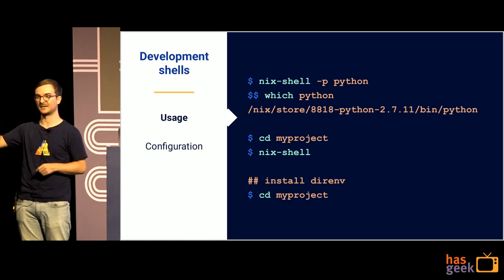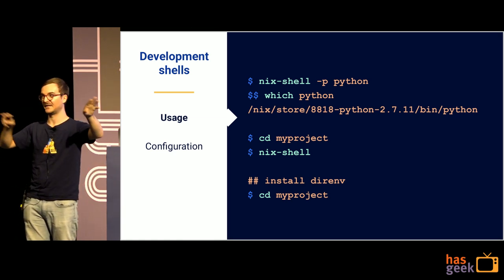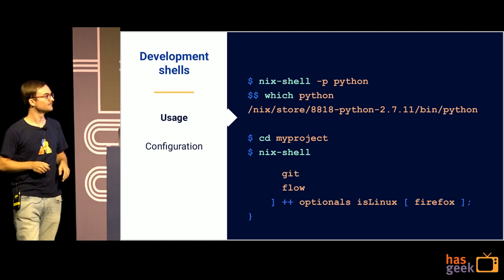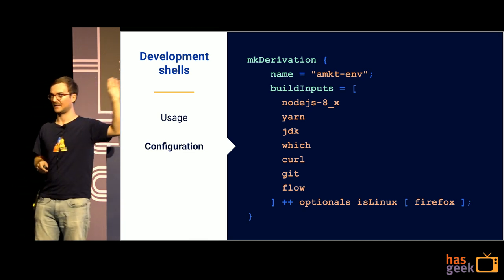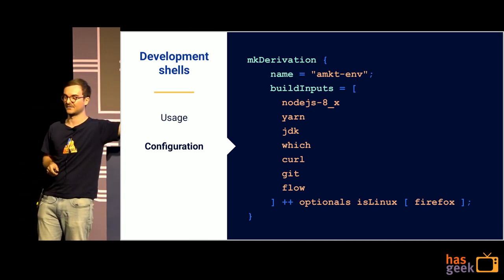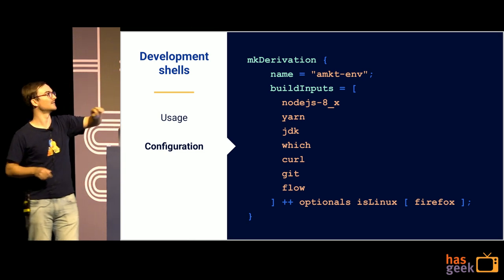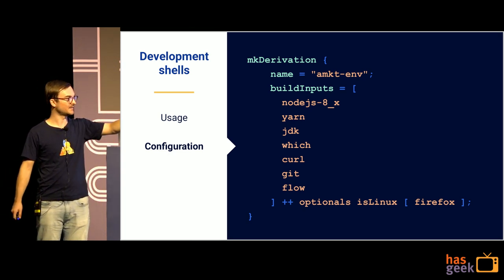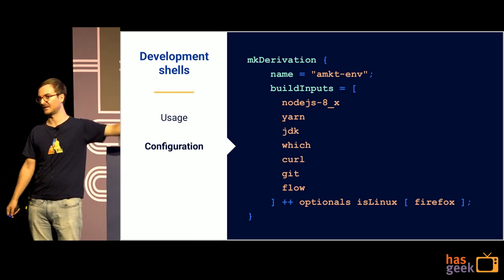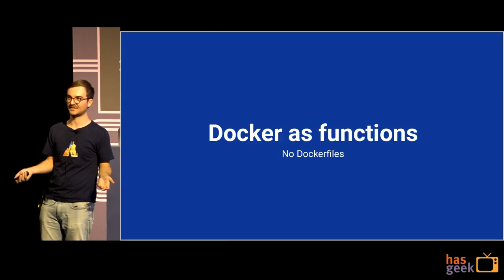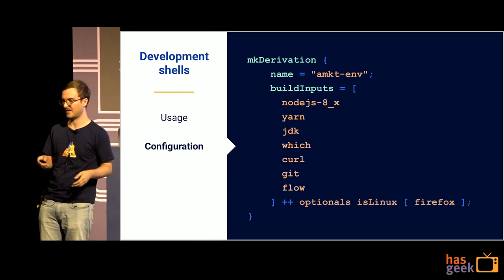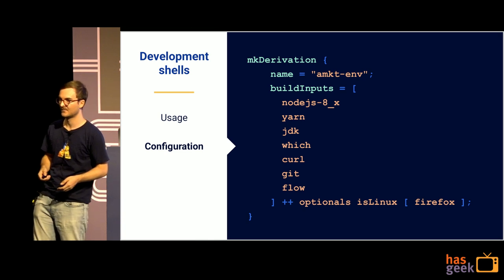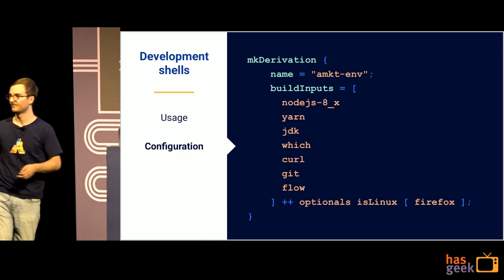You could have one directory with Node.js 8 and over here have Node.js 10 — change between directories and it'll silently switch between the versions of Node.js. Here's an example of a shell.nix: you call mkDerivation and give it build inputs — Node.js 8, yarn, git, and everything you need when building your software. The last line is interesting: we're calling a function called optionals, saying if it is Linux also include Firefox, because in our CI system we have UI tests that use Firefox. So we've optionally included Firefox on Linux.